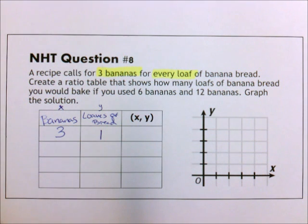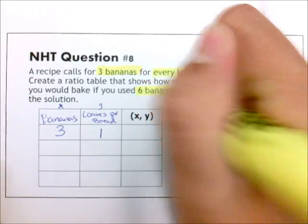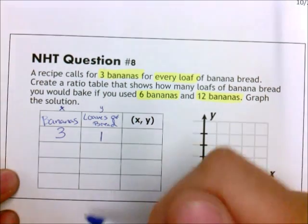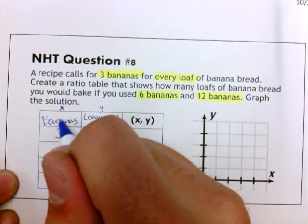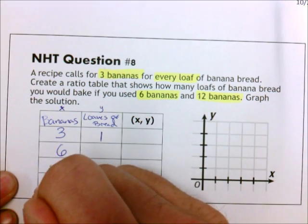It says create a ratio table that shows how many loaves of banana bread if you have 6 bananas and 12 bananas. So I am just going to fill that out on my table. 6 bananas, 12 bananas. I have an extra space down there.